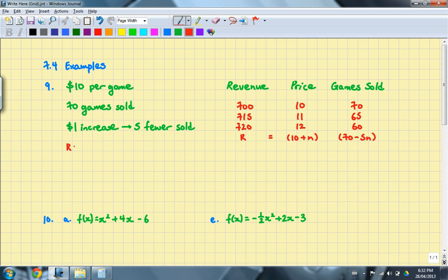And then what we want to do is to multiply this out. So here we are. R is equal to (10 + N) times (70 - 5N). So we will use FOIL to multiply this out. First to first, and then just like that. That will give us 700 - 50N + 70N - 5N². And then I'll combine the like terms, which gives 700 + 20N - 5N².